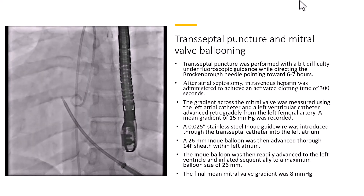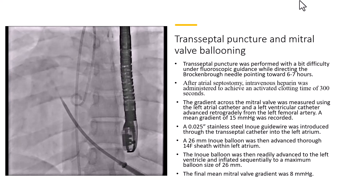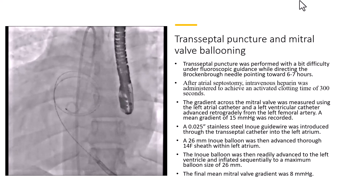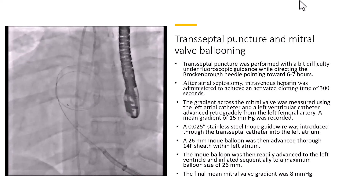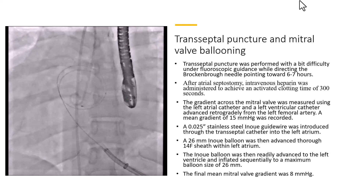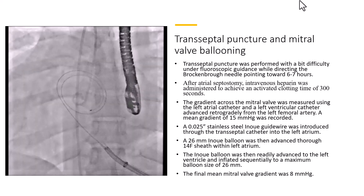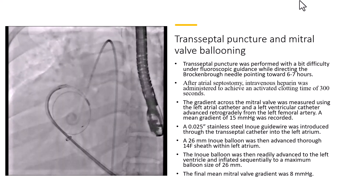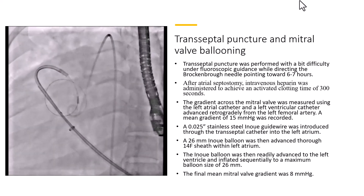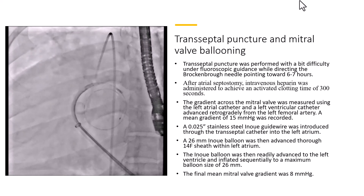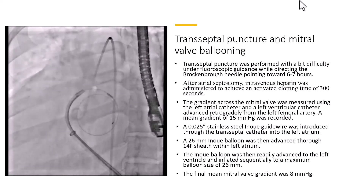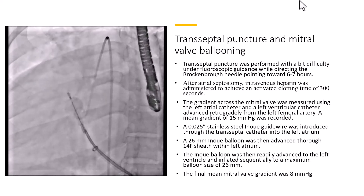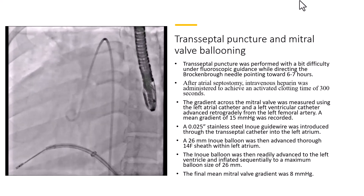After atrial septostomy, intravenous heparin was administered. The gradient across the mitral valve was measured at about 15 mmHg. A 0.025-inch stainless steel Inoue guidewire was introduced through the transseptal catheter into the left atrium, and the 26 mm Inoue balloon was advanced through the 14-French sheath within the left atrium. The balloon was advanced to the left ventricle and inflated sequentially to a maximum balloon size of 26 mm. The final mitral valve gradient decreased to 8 mmHg.